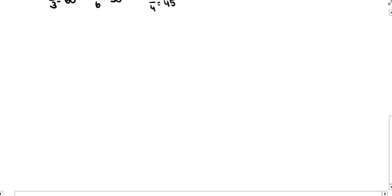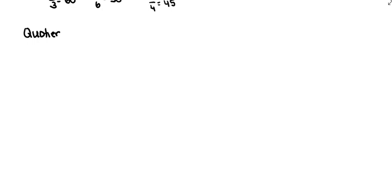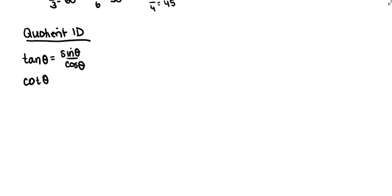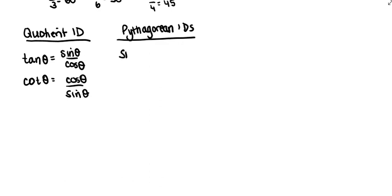We also need to know our identities — our quotient identities. Tangent of theta equals sine theta over cosine theta, and cotangent of theta equals cosine theta over sine theta. We need to remember our Pythagorean identities: sine squared theta plus cosine squared theta equals 1, 1 plus cotangent squared x equals cosecant squared x, and tangent squared x plus 1 equals secant squared x.